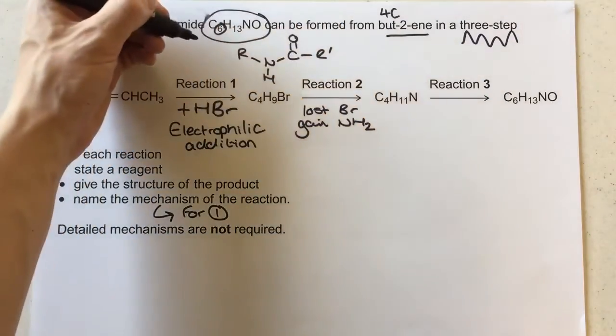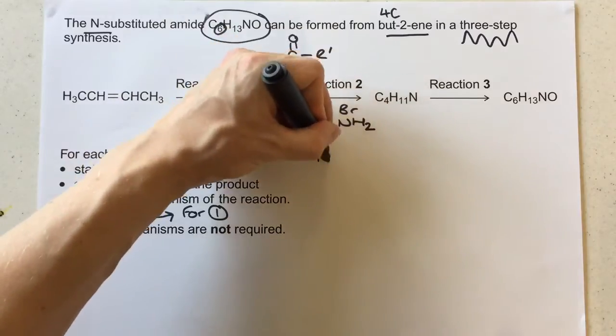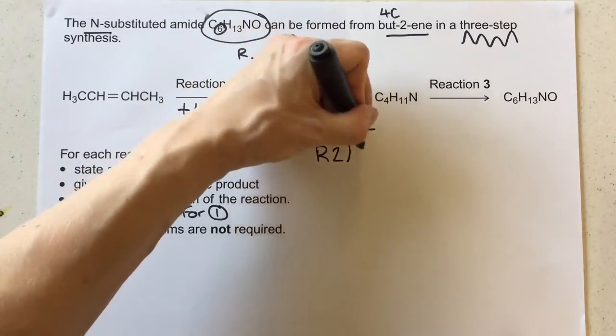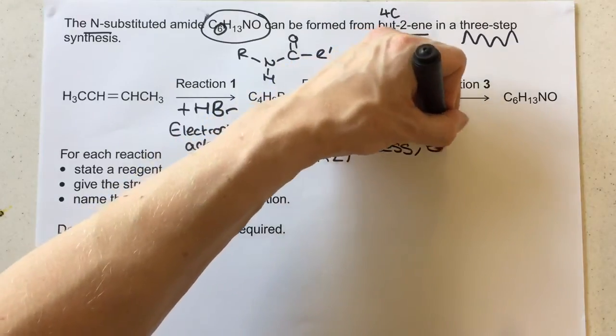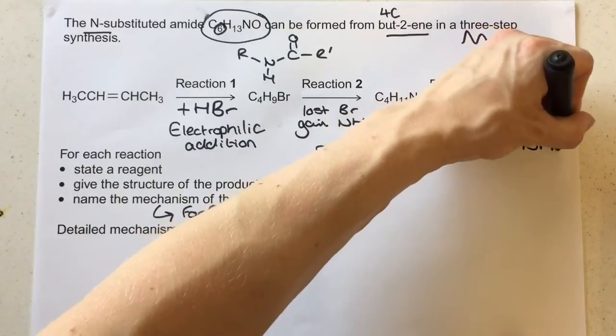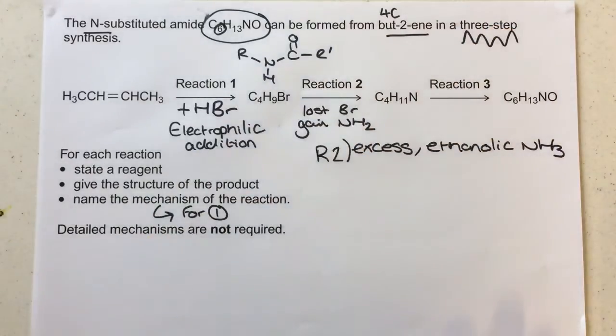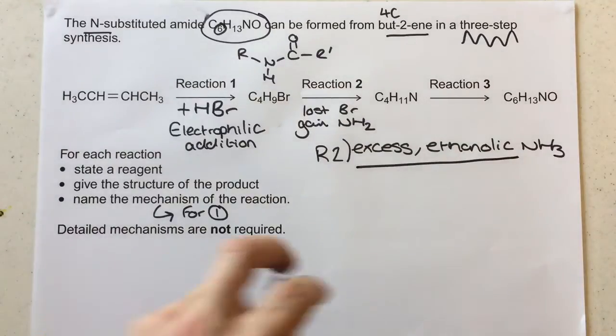Now for this then, for this reaction, what we're going to need is, for reaction two, let's just make a note down here, this is excess ethanolic NH3. So you need excess ethanolic ammonia, and they are really big on this, you must make sure that you use that to make sure that you get this as the major product at the end.